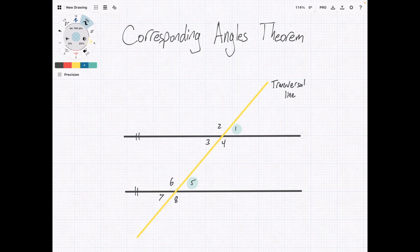So, one is going to be equal to five, two is equal to six, three is equal to seven, and four is equal to eight.